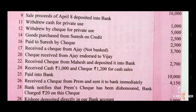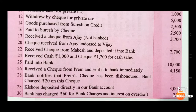24th: received cash Rs. 1,000 and cheque Rs. 1,200 for cash sales. 25th: paid into bank Rs. 10,000. 26th: received a check from Prem and sent it to the bank immediately Rs. 4,150. 28th: bank notifies that Prem's check has been dishonored and bank charged Rs. 20. 28th: Kishore deposited directly in our bank account Rs. 3,000. 30th April: bank charged Rs. 60 for bank charges and interest on overdraft Rs. 720.